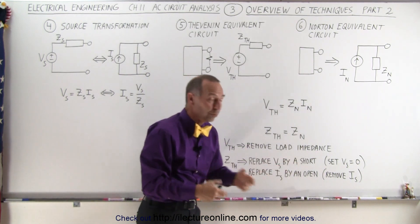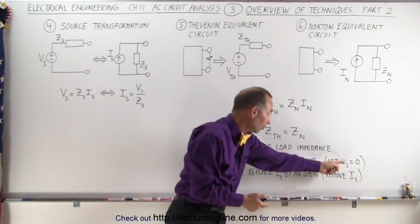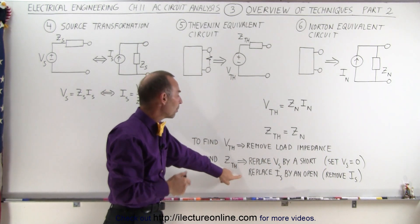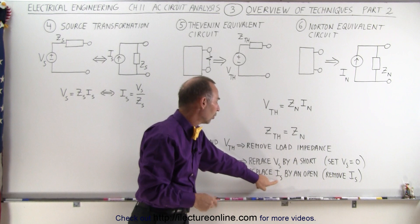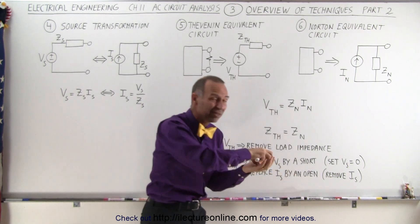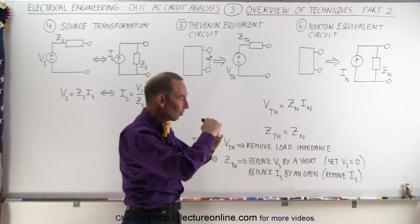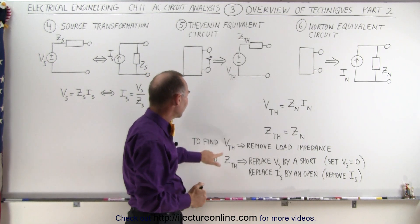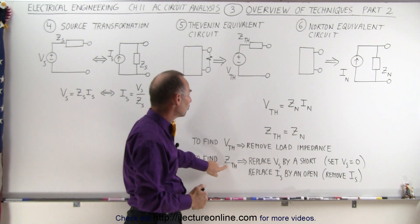To find the Thévenin impedance, replace the voltage sources by a short—in other words, we set the voltage source equal to zero, but we keep the circuit there, we keep a short circuit there—and we replace the current sources by an open. We simply remove the current sources and leave the circuit open. Once we do that, we can then calculate the Thévenin voltage and the Thévenin resistance.